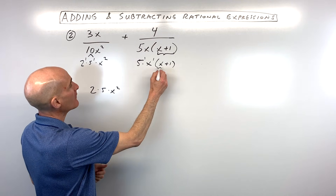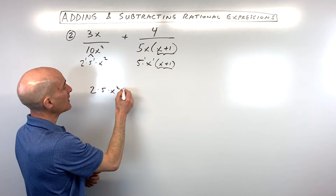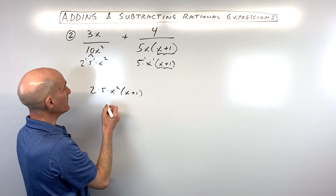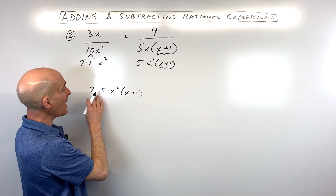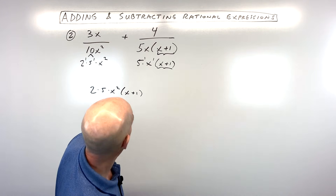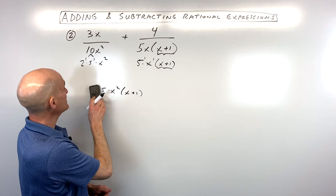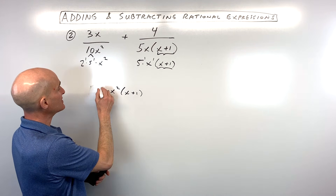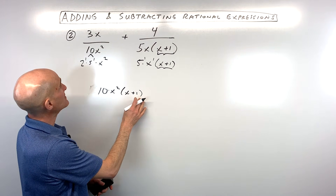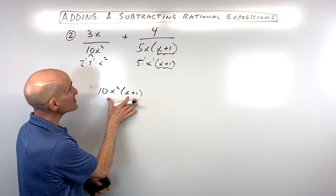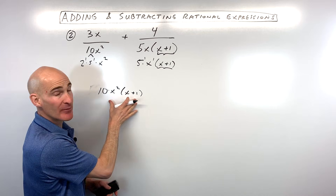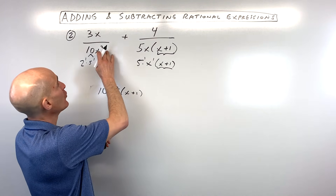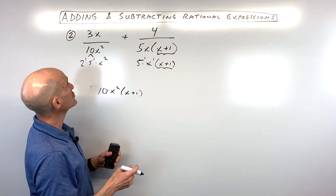We also have x plus 1 in the second denominator but not the first, so we need x plus 1. Putting it together: 2 times 5 is 10, times x squared, times x plus 1. So our common denominator is 10x squared times x plus 1. We want to make sure both fractions have that common denominator.